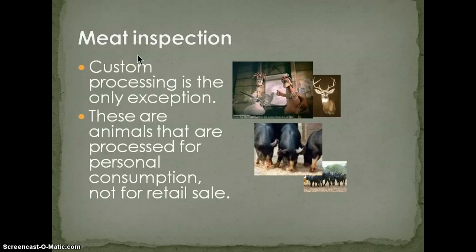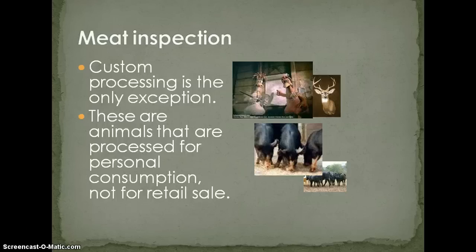There is one exception to mandatory inspection called custom processing. A processor may process a deer or other animal — basically getting paid to cut the meat and give it back to the person who shot or raised it. The understanding is that the animal will not be sold and no money will be exchanged other than the processing fee. Custom processing is the only exception to meat that does not have to be stamped and inspected, because it's not being sold to the public.